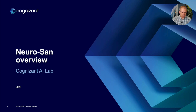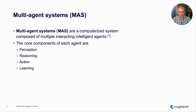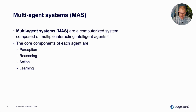This is an overview of Neurosan. Let's first talk about multi-agent systems. Multi-agent systems are a computerized system composed of multiple interacting intelligent agents, and the core components of the agents are perception, reasoning, action, and learning. Basically, agents perceive the environment, they reason about the environment, they perform an action, and they gradually learn from their actions and results in the environment.